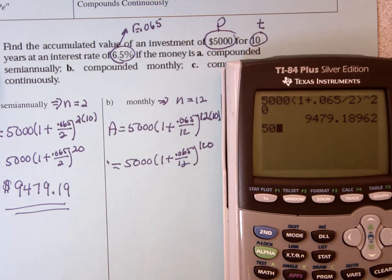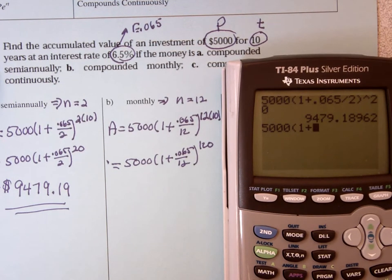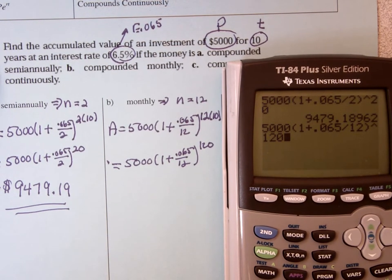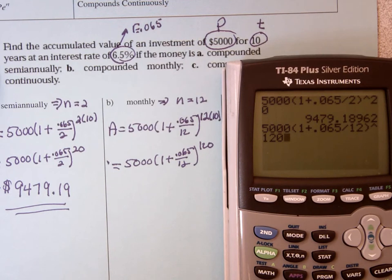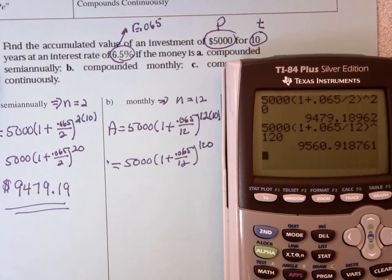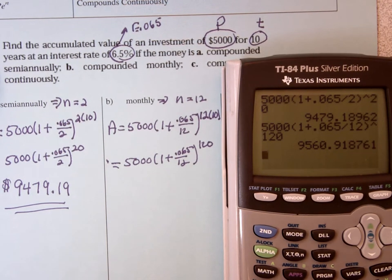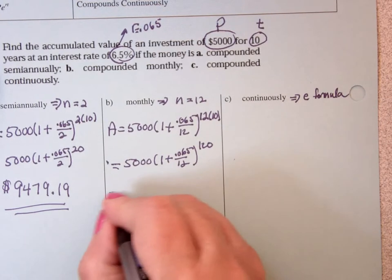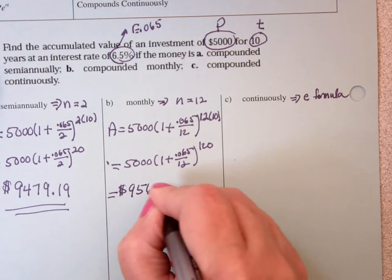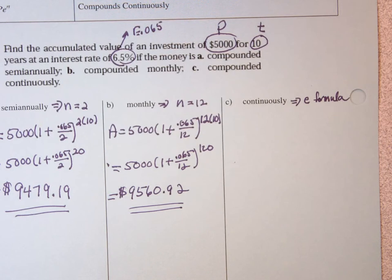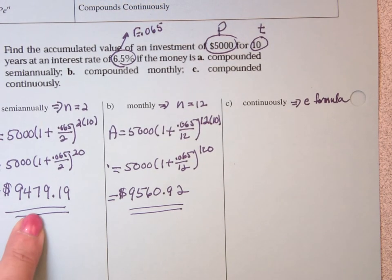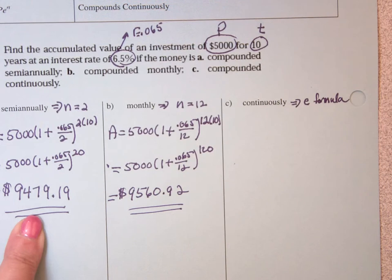So 5,000 times 1 plus .065 divided by 12 to the 120. Now I should be around 9,000 something. Should be bigger than 9,400. And I'm in a range $9,560.92. If I would have come out with $20,000, I know I would have made a mistake. If I would have come out with less than 9,400, I would have made a mistake. Because the number should be increasing because I'm calculating the interest more frequently.